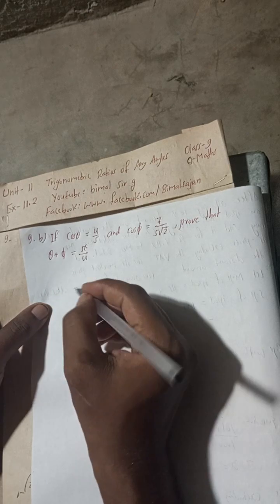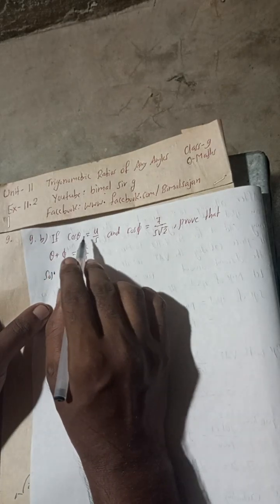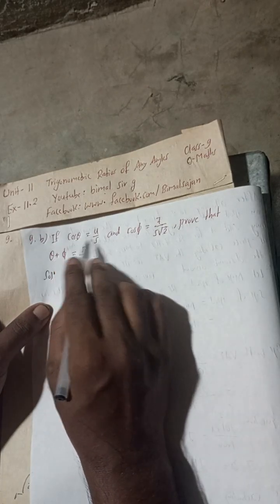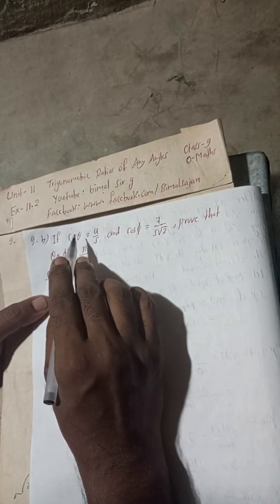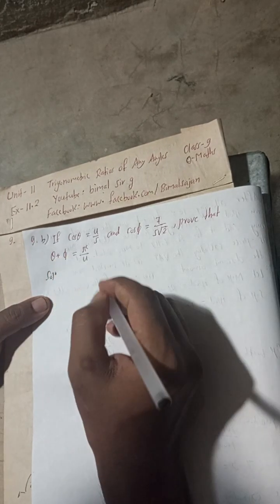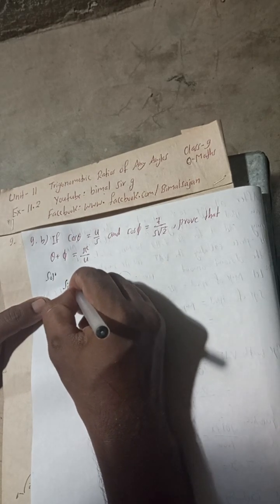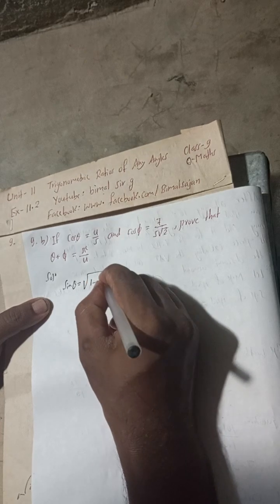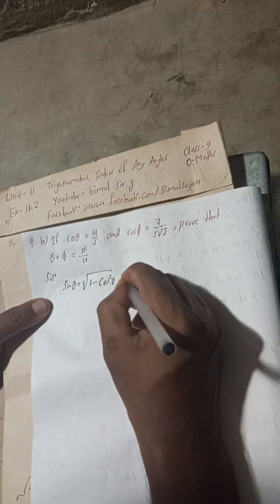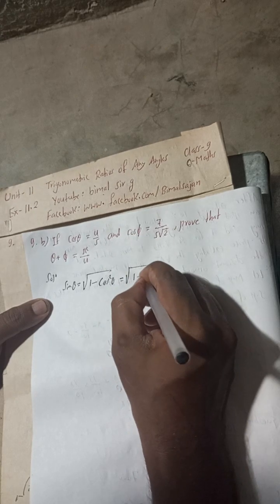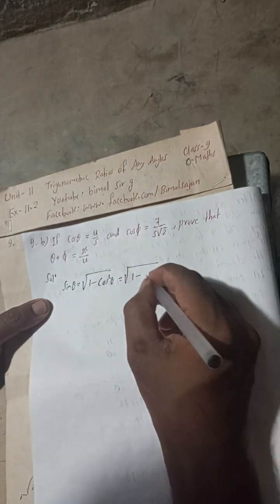Here cos θ is given, so now we will find the sin θ value. The formula is sin θ = √(1 - cos²θ). So sin θ = √(1 - (4/5)²).